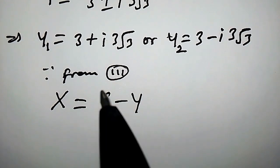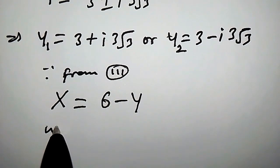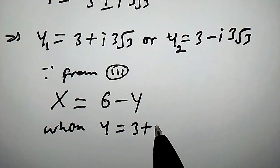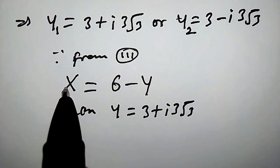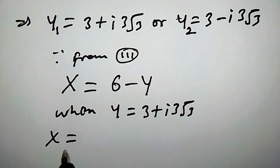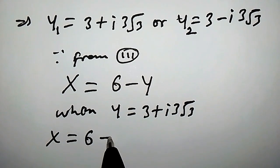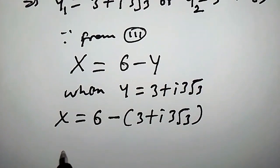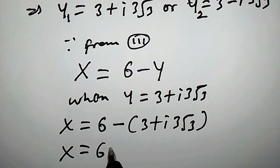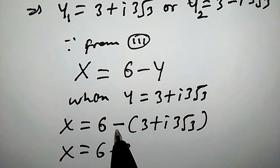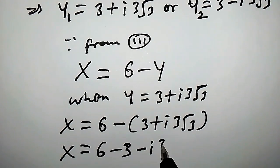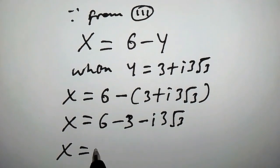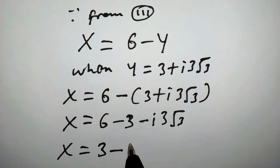We will now consider each value of y. When y equals 3 plus i times 3 root 3, equation 3 becomes x equals 6 minus (3 plus i times 3 root 3), which gives x equals 6 minus 3 minus i times 3 root 3. Therefore x equals 3 minus i times 3 root 3.